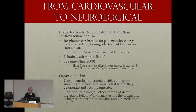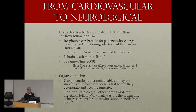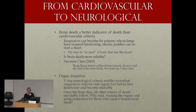There's been a movement from the older, more traditional cardiovascular criteria to neurological. The neurological or brain death is widely accepted as the correct criteria for death in many places. One reason is scientific or medical — the idea that brain death is a better indicator that someone has died than cardiovascular criteria.